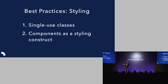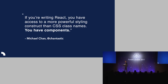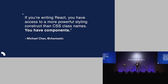The second best practice is using components as a styling construct — having a grid component, a column component, a row component that you reuse throughout your application for consistent layouts. These components don't necessarily have any specific behavior, but they're focused on what the styling looks like. Michael Chan wrote a great article about styling in React with this quote: 'If you're writing React, you have access to a more powerful styling construct than CSS class names — you have components.' We can share and reuse them without needing CSS class name naming conventions.